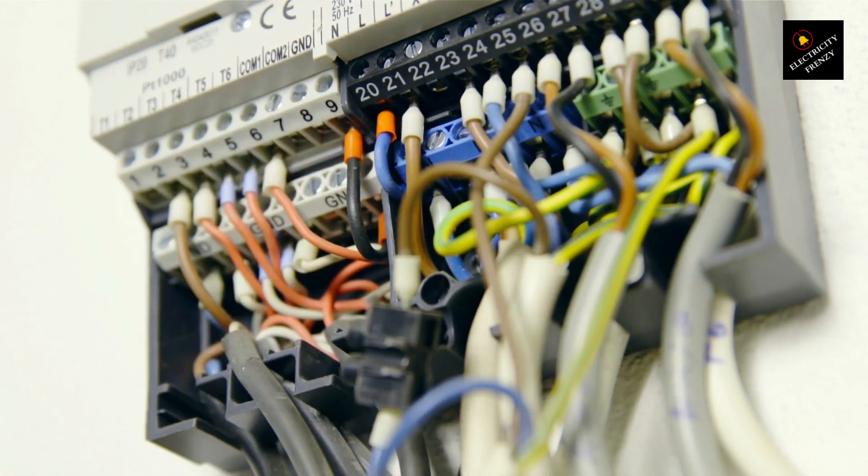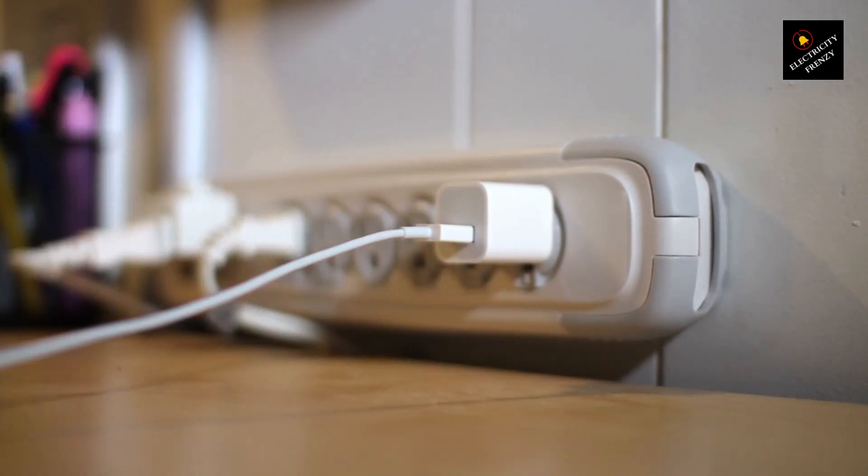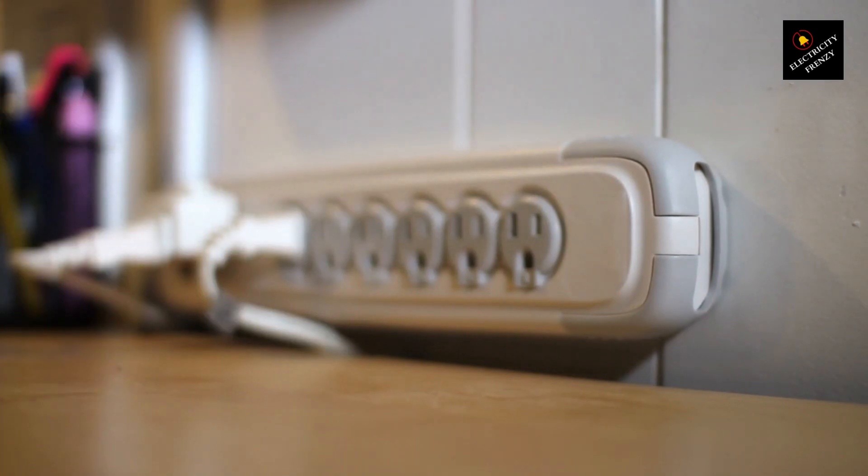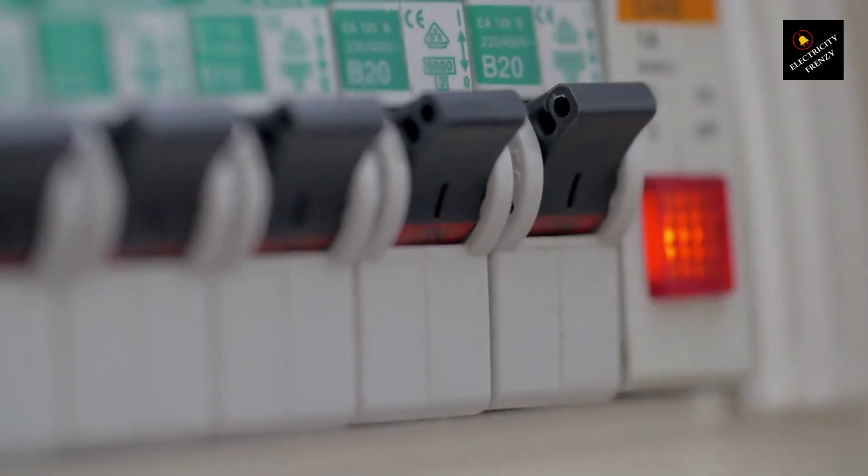Short circuit. A short circuit occurs when a live wire comes into direct contact with either the neutral wire or the ground. This connection bypasses the intended circuit path, causing a sudden surge of electrical current. As a protective measure, the circuit breaker trips to prevent further damage or potential hazards.